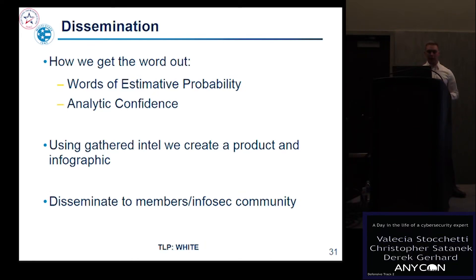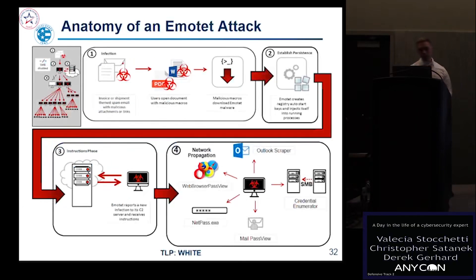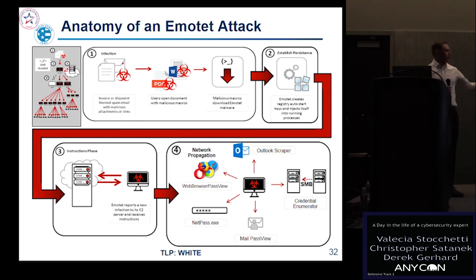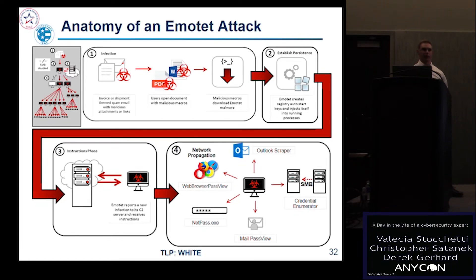Using the gathered intelligence, we put together a product — in this case a security primer — and also an infographic to take this complex issue and break it down to its simple parts. The Emotet infographic shows four stages: stage one is infection; stage two is how it establishes persistence, hooking into your system; stage three is reaching out to C2 infrastructure, telling the attacker about your system and downloading instructions and dropping more malware; stage four is where the real damage is done — it spreads throughout your entire network, causing a nightmare for remediation and costing millions.